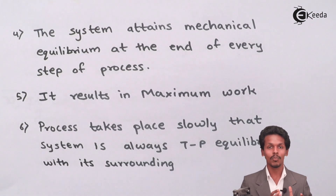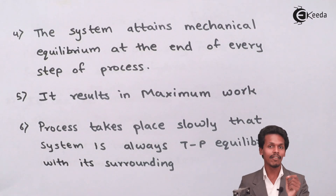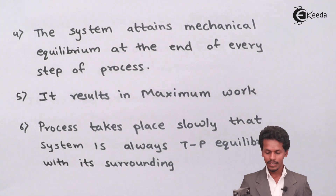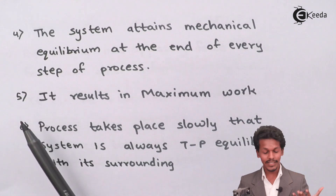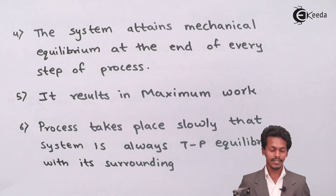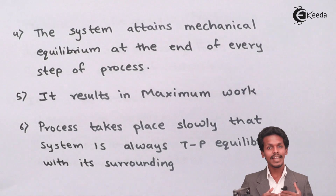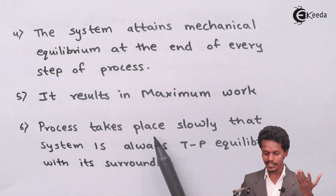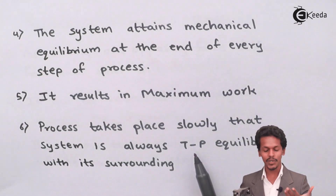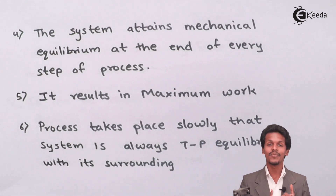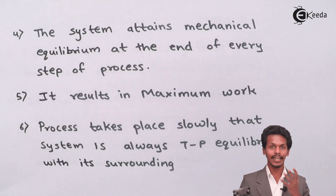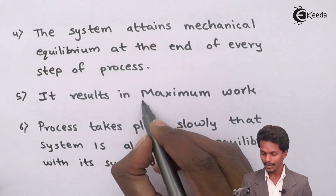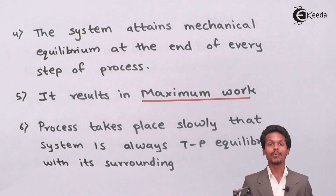Since the driving force and opposing force are almost the same, mechanical equilibrium is maintained at every stage of the reversible process. Because of this, maximum work is obtained, as no heat or energy is wasted — the process takes place in very slow steps. The last feature is that the process takes place slowly, so the system is always in temperature and pressure equilibrium with the surroundings. The most important outcomes are the balance of forces and the maximum work obtained from a reversible process.